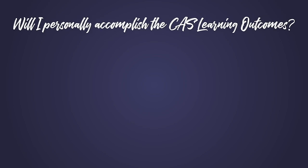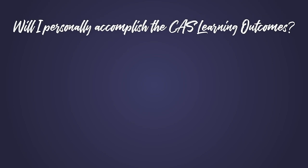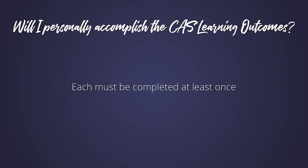Keep in mind that throughout your 18 months in the CAS program, you must show that you have managed to accomplish all of the seven learning outcomes, some of which will be demonstrated many times in various activities. But completion of CAS requires evidence of meeting each outcome a minimum of once.